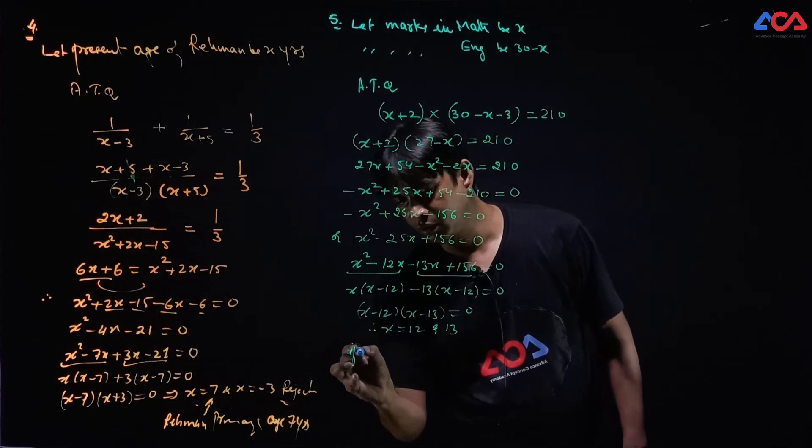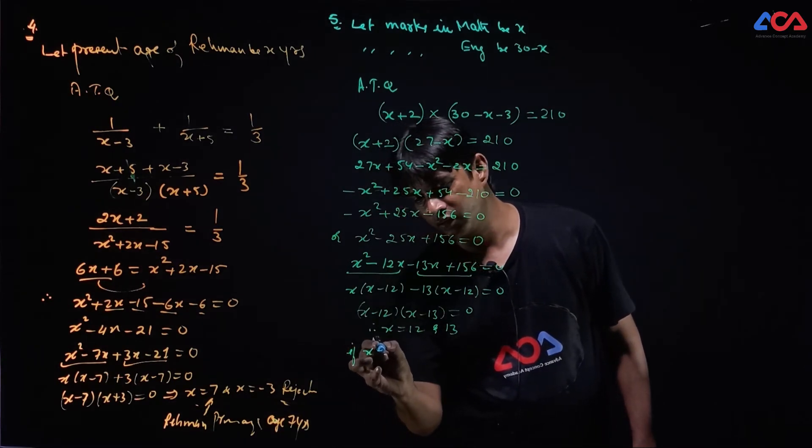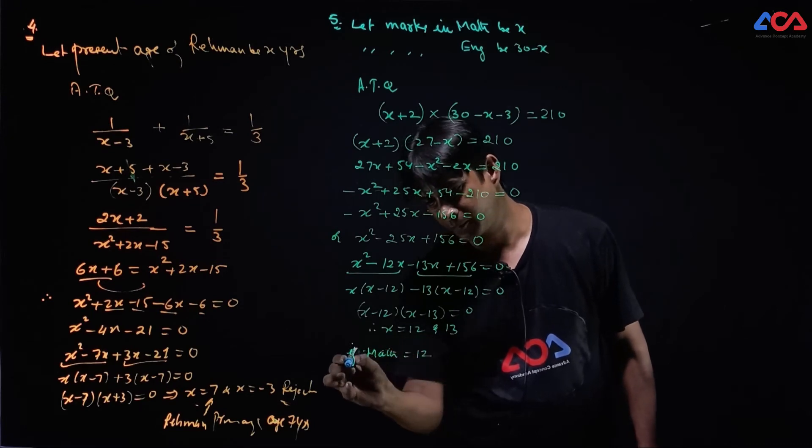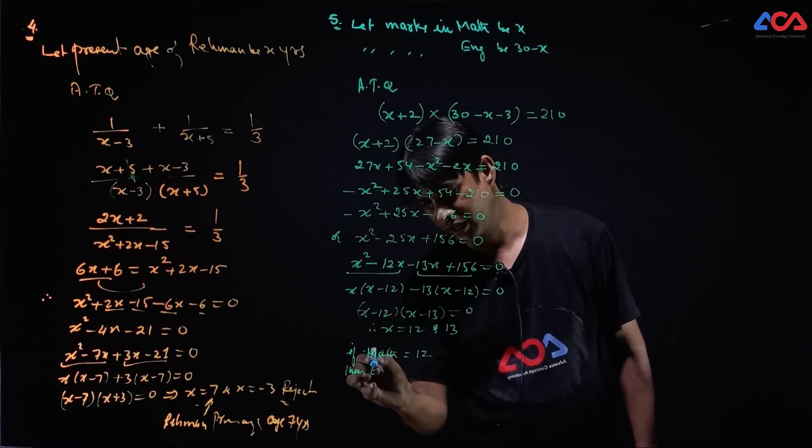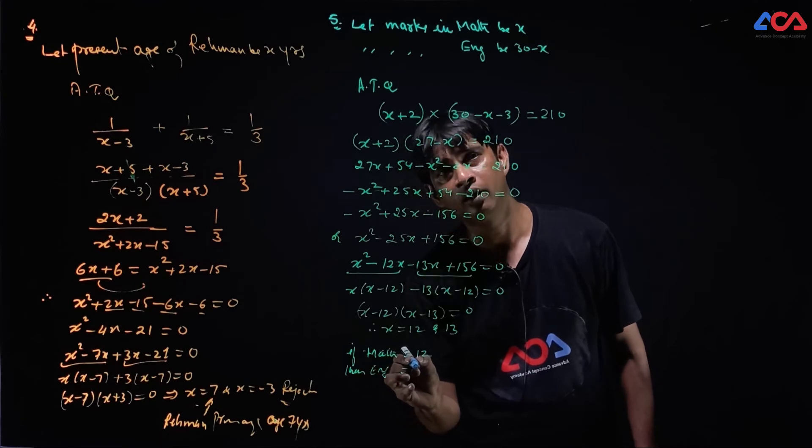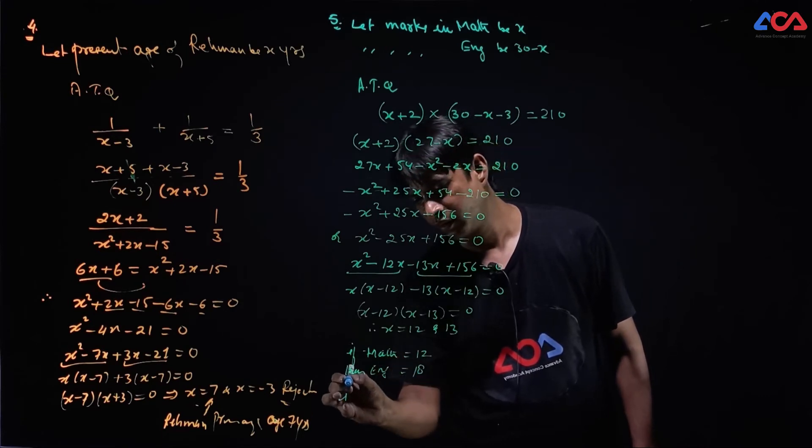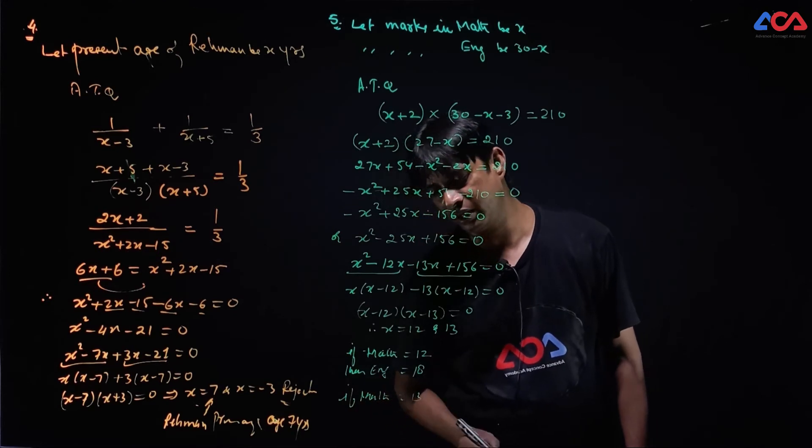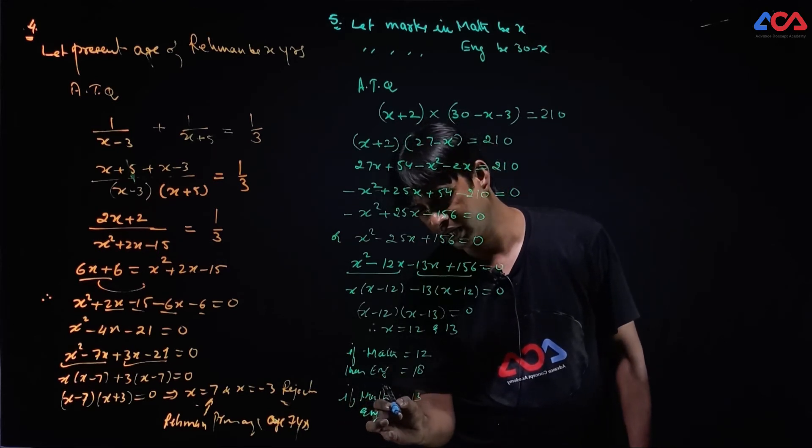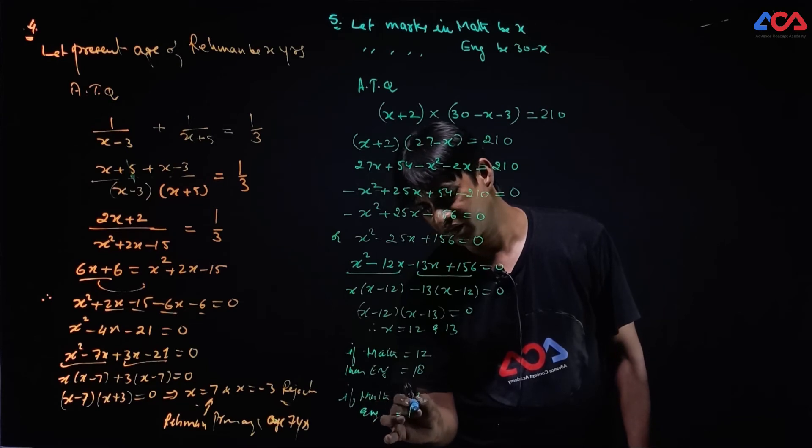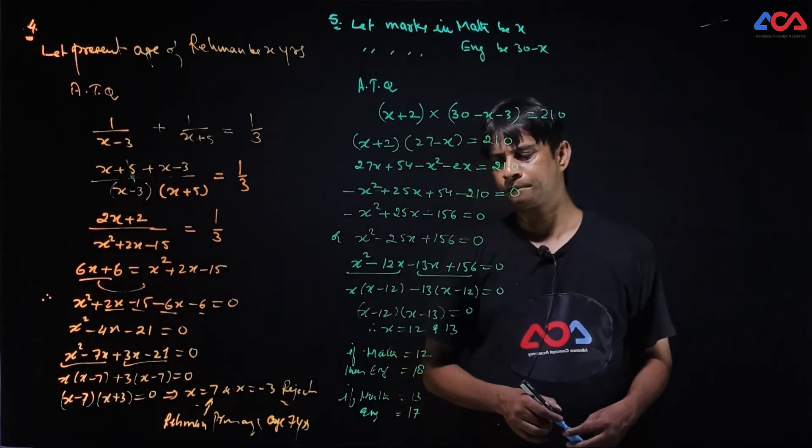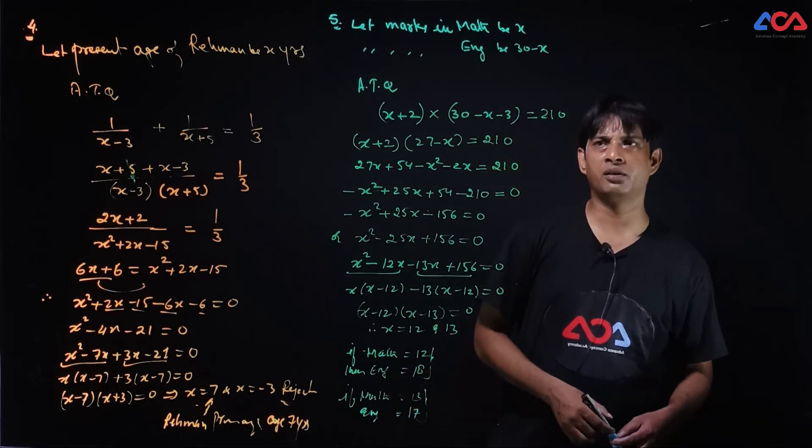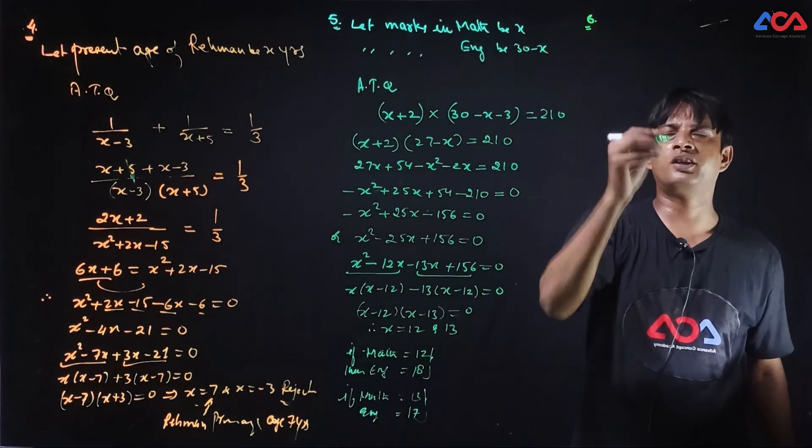If x is equal to marks in mathematics, in maths if you have 12, then in English you will have 18. If you have 13 marks in mathematics, then you will have 17 marks. So both of you are equal to 30. There are two cases. Let's take one question. There are six questions.